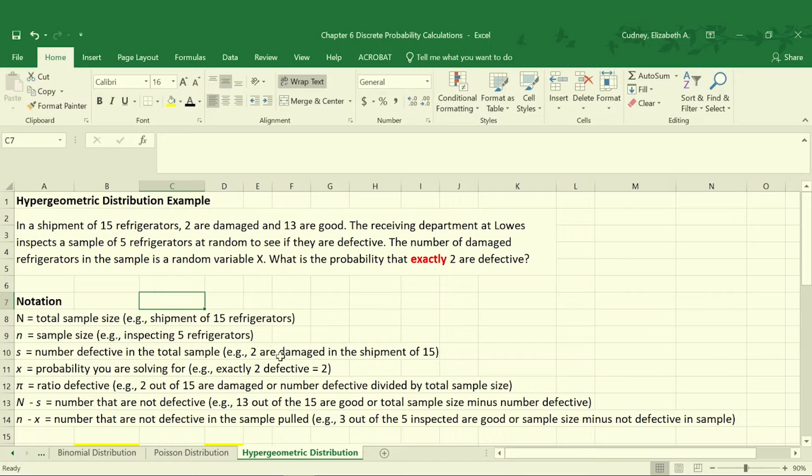Our S is our number that are defective in the total sample. And in this case, we know two were damaged in the shipment of 15. X is the probability that we're solving for. We want to know in this example that there's exactly two defective. Pi is our ratio defective. We know, based on past experience, that two were damaged out of the 15.